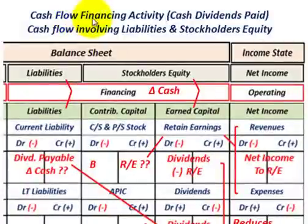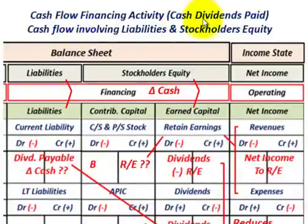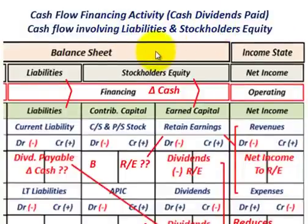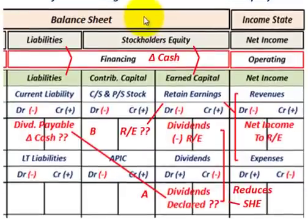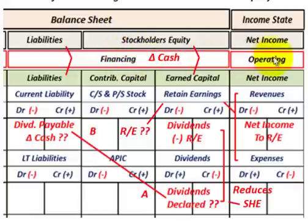What we're going to be going over here is cash flow for financing activities, and we're going to be specifically looking at cash dividends paid. The cash flow for any cash dividends paid is going to involve both liabilities and stockholders' equity on our balance sheet. The cash flow statement includes an investing activities section, a financing activities section, and also operating activities. Cash dividends paid falls under financing activities.